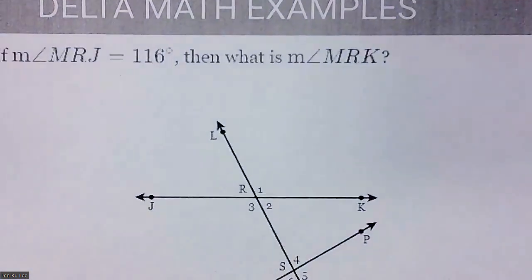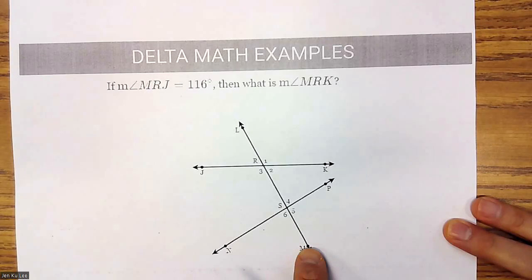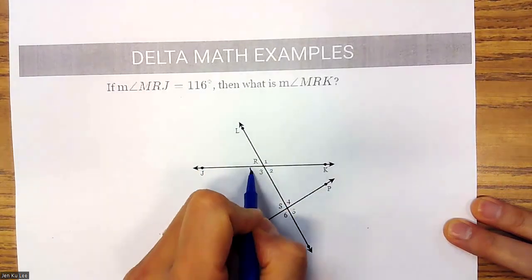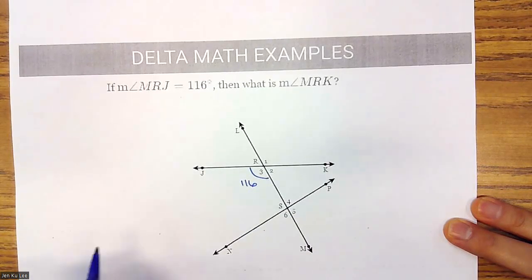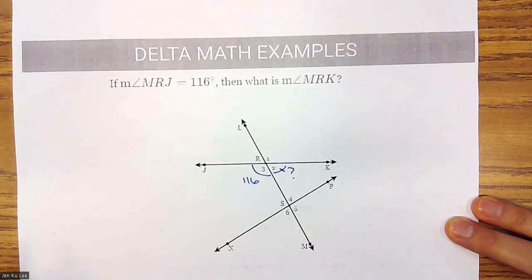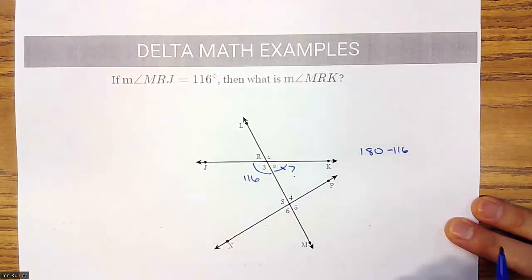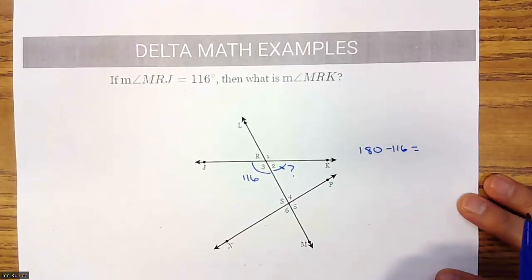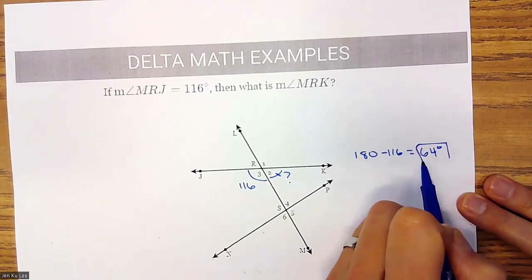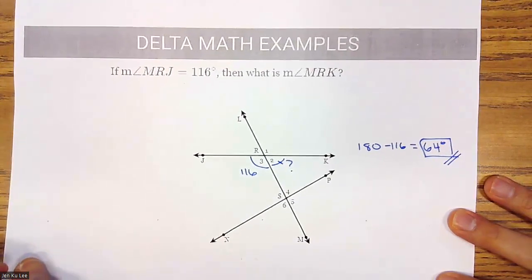If the measure of angle MRJ equals 116 degrees, then the measure of angle MRK — we just go 180 minus 116, which equals 164 degrees.